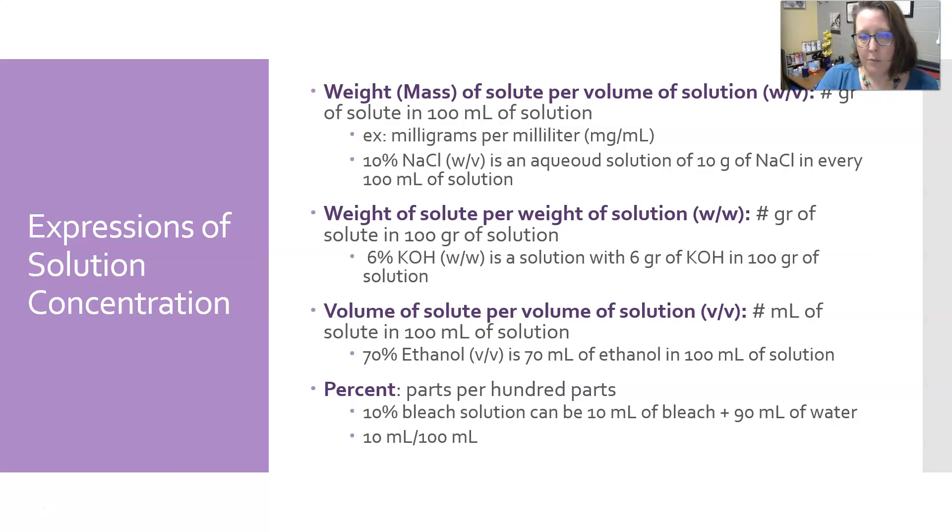The volume of solute per the volume of the solution, V over V, is the number of mL of solute in 100 mL of solution. 70% ethanol (V/V) is 70 mL of ethanol in 100 mL of solution. So of that 100 mL that you measure, 70% of it is ethanol, and the rest is something else - could be a different alcohol, could be water, something else.